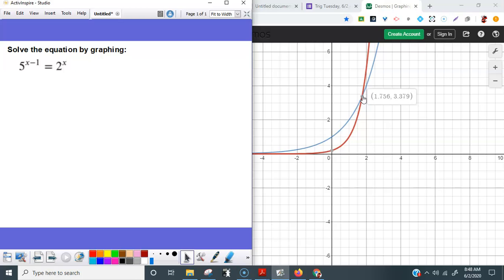So the solution here, 1.756. We found it with the intersection. We did it with Desmos. You could have done it with a TI graphing calculator as well.